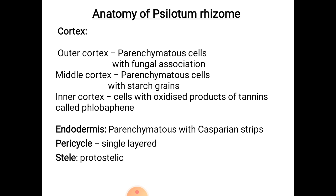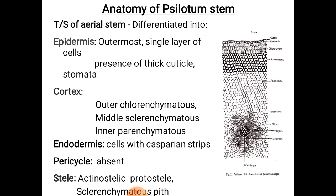The anatomy of Psilotum stem: the TS of Psilotum stem is differentiated into three regions — epidermis, cortex, and stele. Epidermis is the outermost single layer of cells covered by thick cuticle; sunken stomata are present. Cortex is differentiated into three zones: outer chlorenchymatous, middle sclerenchymatous, and inner parenchymatous. Endodermis consists of parenchyma cells with casparian strips. Pericycle is absent. The stele is actinostelic protostele. Psilotum consists of annular tracheids; sometimes spiral tracheids may also be present.